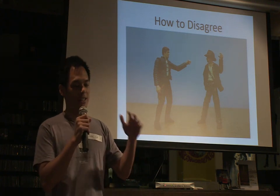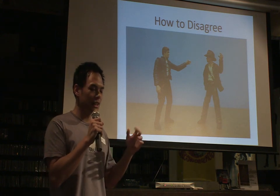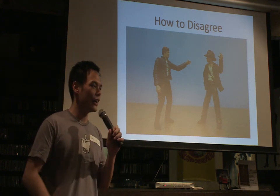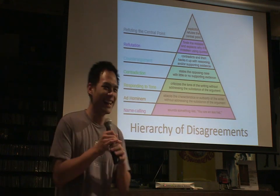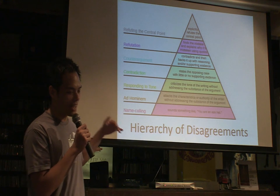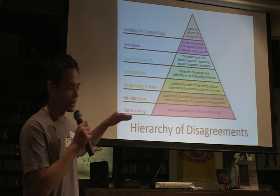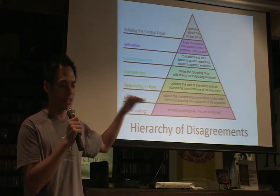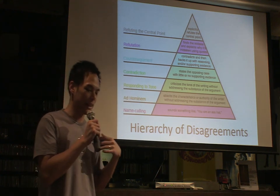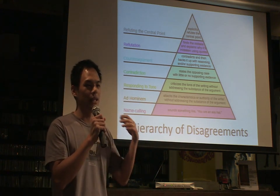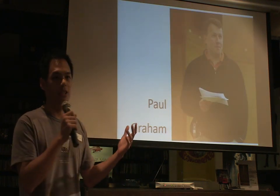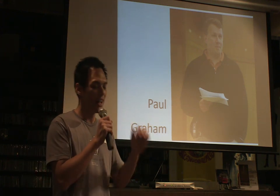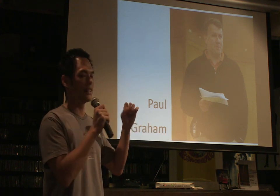A few years ago I came across this thing called the hierarchy of disagreement, and it looks like this. It goes from name calling to refuting the central point, and each level you go up, you get more value out of the comments. This was not invented by me — it's invented by a person I respect a lot: Paul Graham, who's an angel investor and also an essayist.